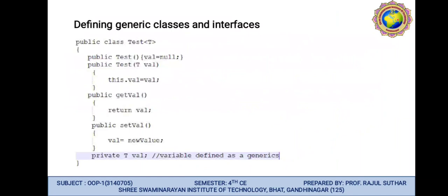We can define a class and interface by using generics. Here is an example of a generic class — a variable defined as private T value. This variable is called a generic variable. If we declare a particular variable as private T, it is called a generic variable.